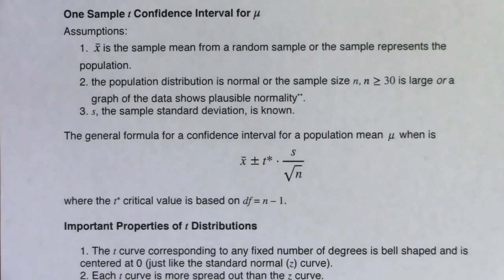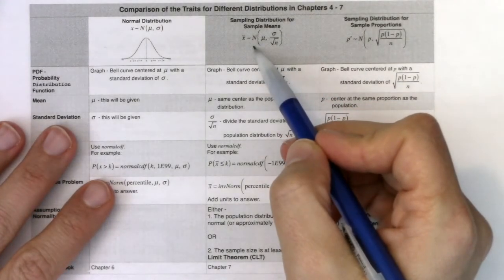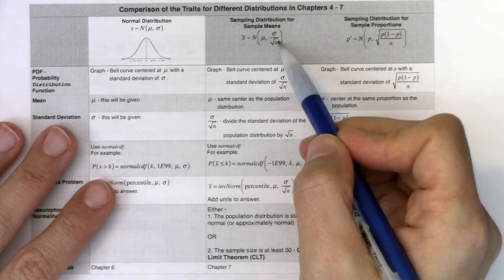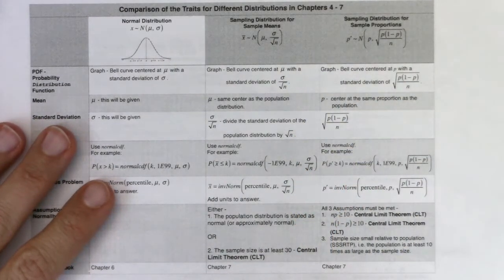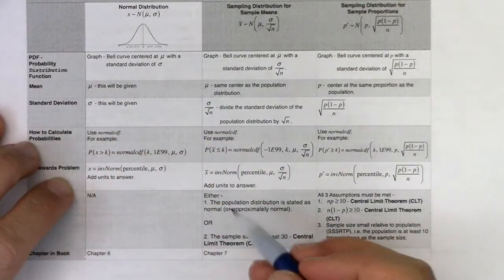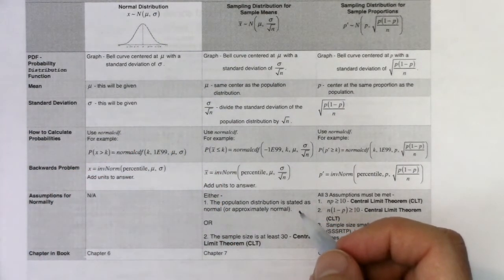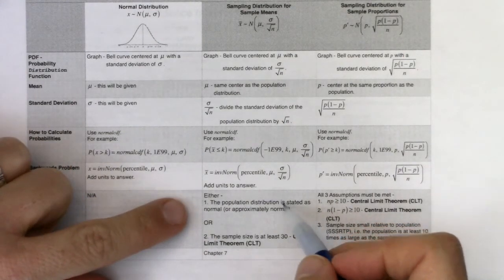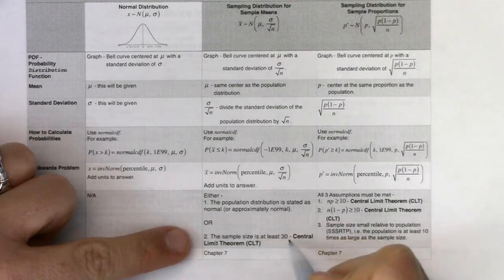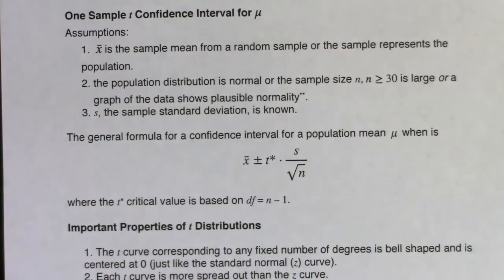To remind you where we've come from: in chapter 7 when we talked about means, we realized that averages are normally distributed. The center is the same as the population distribution and the standard error has its formula. We knew that as sample size increased, standard error decreased. In chapter 7 there were two ways to get normality — one or the other had to happen. We're going to pick up a third way in chapter 8, and we're not going to do that until the second example.